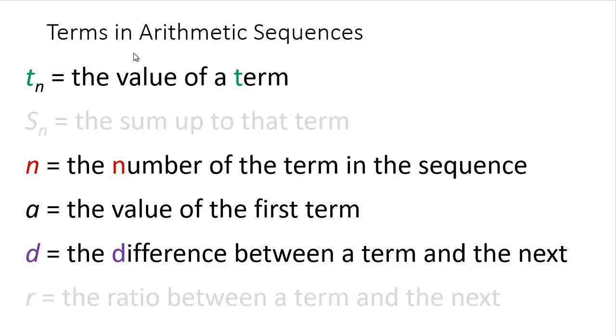We're finding the value of a term, that is one of the numbers in the sequence. We're going to do it in terms of n, the number along; a, the value of the first term; and d, the difference between the terms.